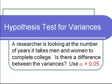A researcher is looking at the number of years it takes men and women to complete college. Is there a difference between the variances? Use a level of significance alpha equals 0.05.